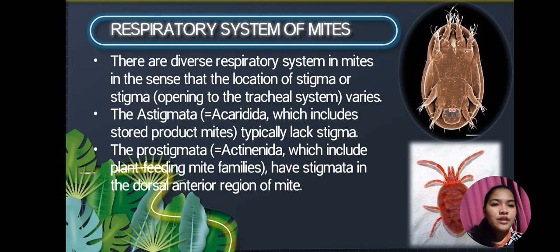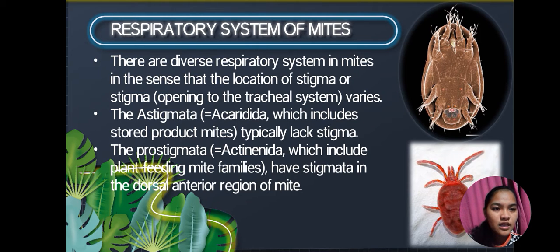There are diverse respiratory systems in mites in the sense that the location of the stigma, or the opening of the tracheal system, varies. The Akaridida, which includes stored product mites, typically lack stigmata in the dorsal anterior region of the mite.